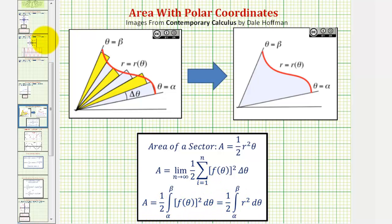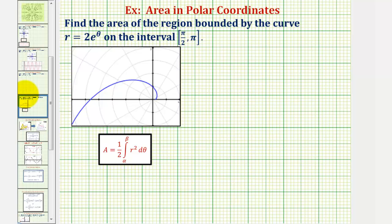Going back to our example, alpha is equal to pi over two and beta is equal to pi.